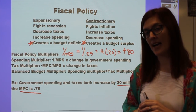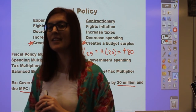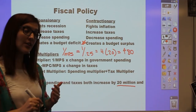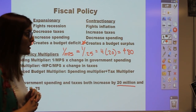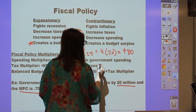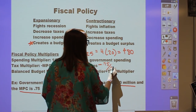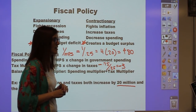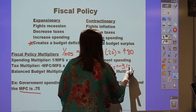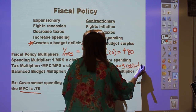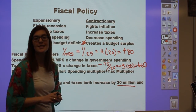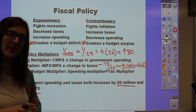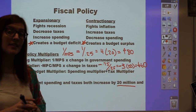The tax multiplier is negative because it illustrates how taxes taken out of income affect GDP. With MPC of 0.75, the tax multiplier formula is negative MPC over MPS: −0.75 / 0.25, which equals −3. Multiplying by the $20 million increase in taxes, GDP would go down by $60 million because of the increase in taxes. So although taxes and spending are both changing by $20 million, GDP does not change by the same amount.